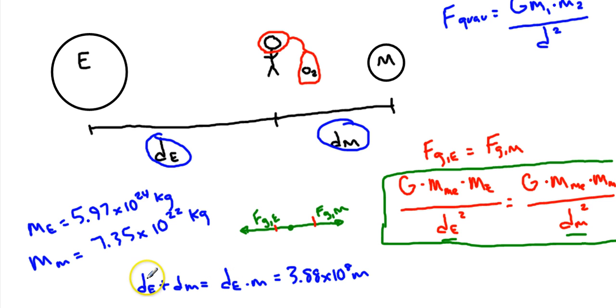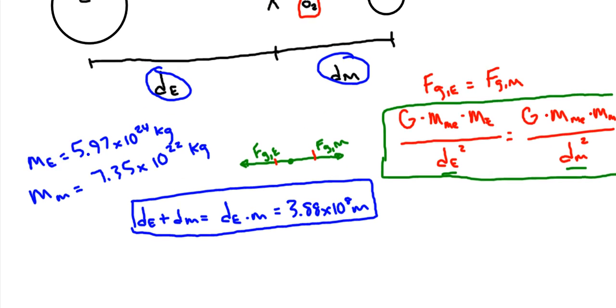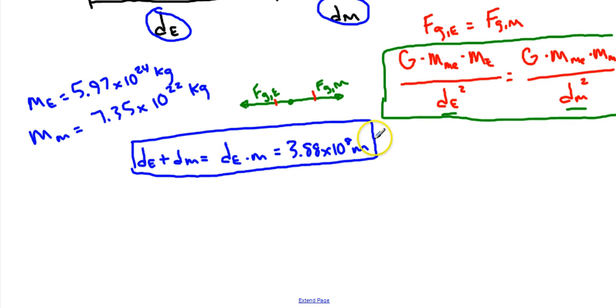So now we have this relationship here that we can use and we can plug it in and start working. Coming from here, we can start plugging some things in, but before we do that, why don't we cancel out anything that's on both sides? Which means that we will cancel out our big G's and we'll cancel out the mass of me. You didn't think I was actually going to give you my mass, did you?